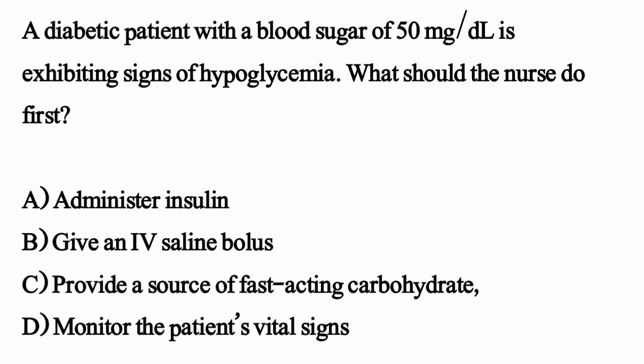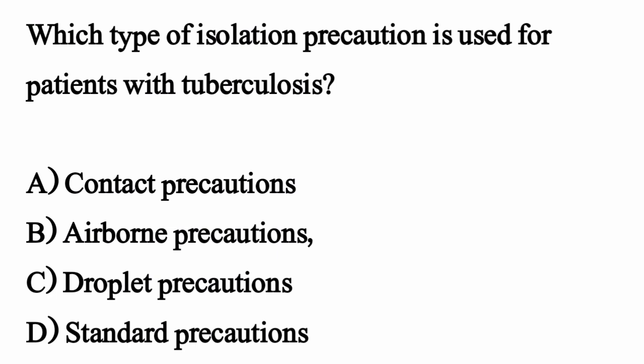Provide a source of fast-acting carbohydrate. The correct option is option C. Which type of isolation precaution is used for patients with tuberculosis? The correct option is option B.